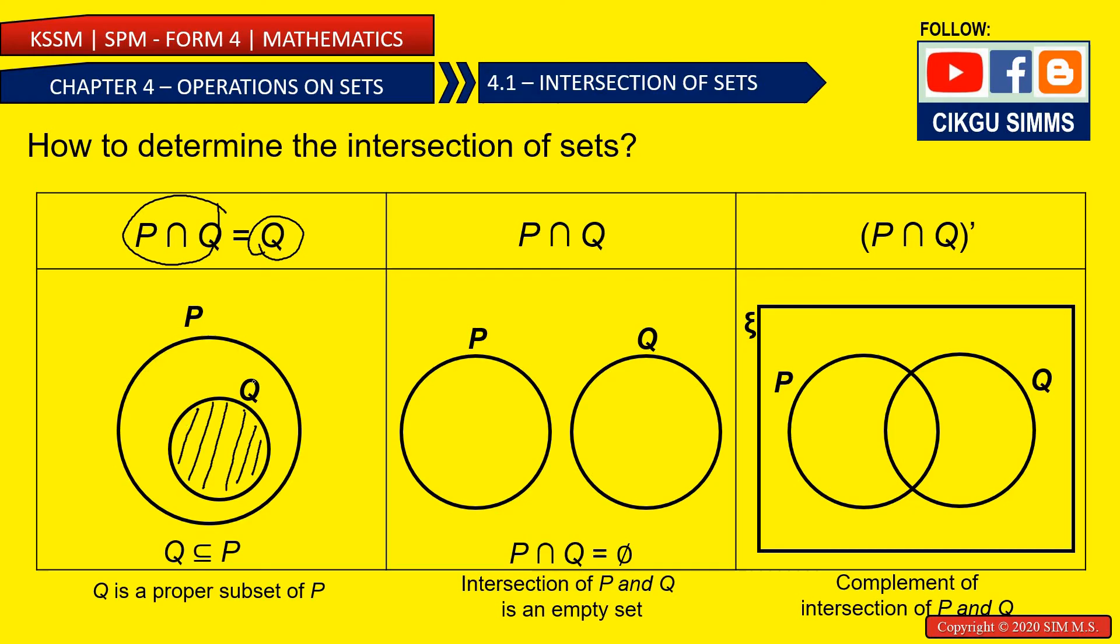This is a special case where all the elements of Q are elements of P. So it doesn't have the outside part. So you can say that Q is a proper subset of P, which means all the elements of Q are elements of P. If you want to shape the intersection, it's the Q. Whole Q will be the intersection. Because everything inside, these are the common elements of both sets.